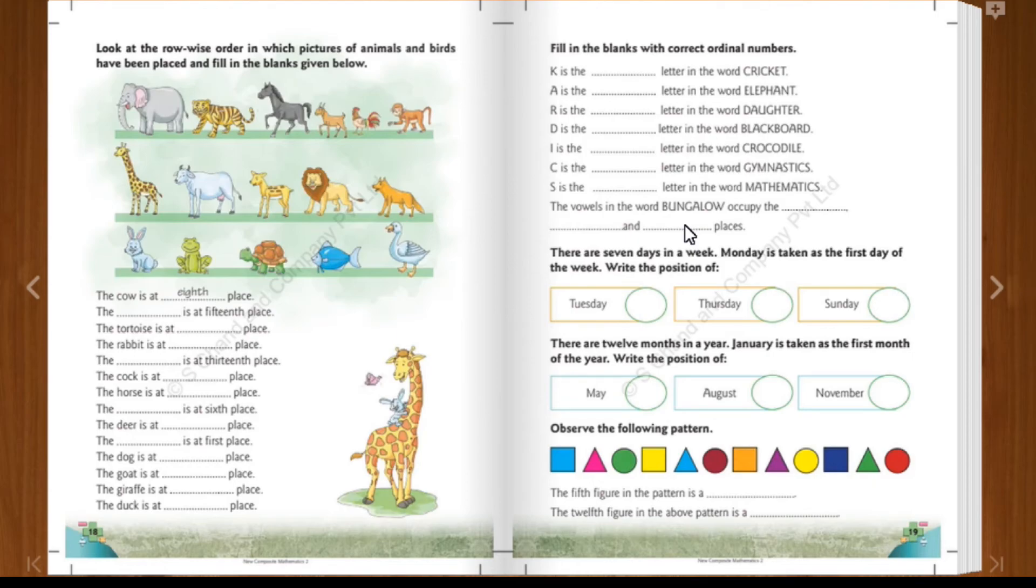Then see the pattern. The 5th figure. What is the 5th figure? 1st, 2nd, 3rd, 4th, 5th is a triangle. It is not a normal triangle. It is a blue triangle. So 5th place you have to write. It is a blue triangle. Then 12th place you will write. Say it is a red circle. So here we are binding this chapter I think.